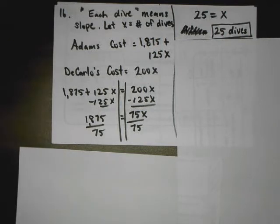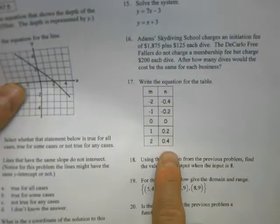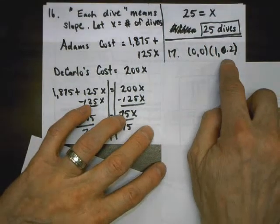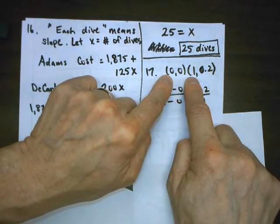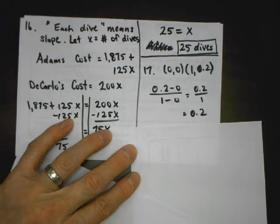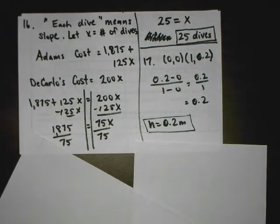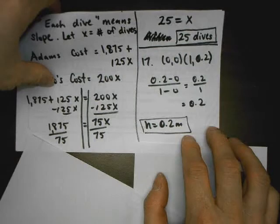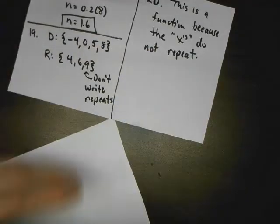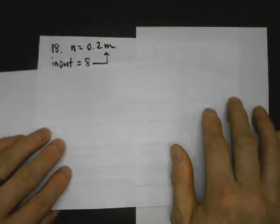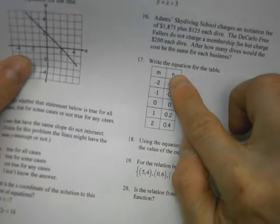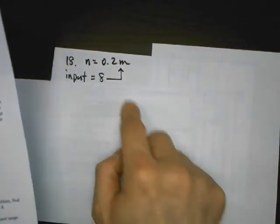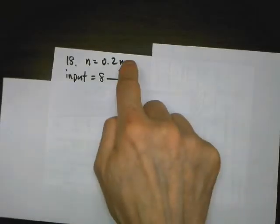Problem 17: write the equation. I take two points from the table — (0, 0) and (1, 0.2) — and do y minus y over x minus x to get a slope of 0.2 or 2 tenths. They give the answers as decimals, so I use a decimal rather than a fraction. For number 18, it says use the equation from the previous problem. The input is 8 — inputs are x's — so I put 8 where x goes and multiply to get my answer.